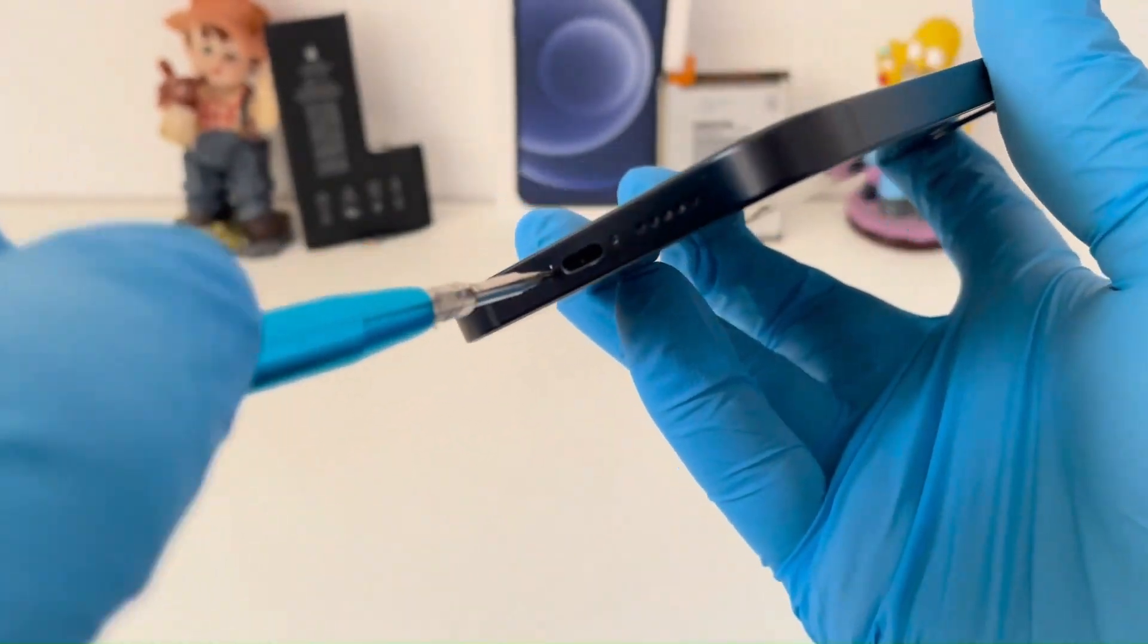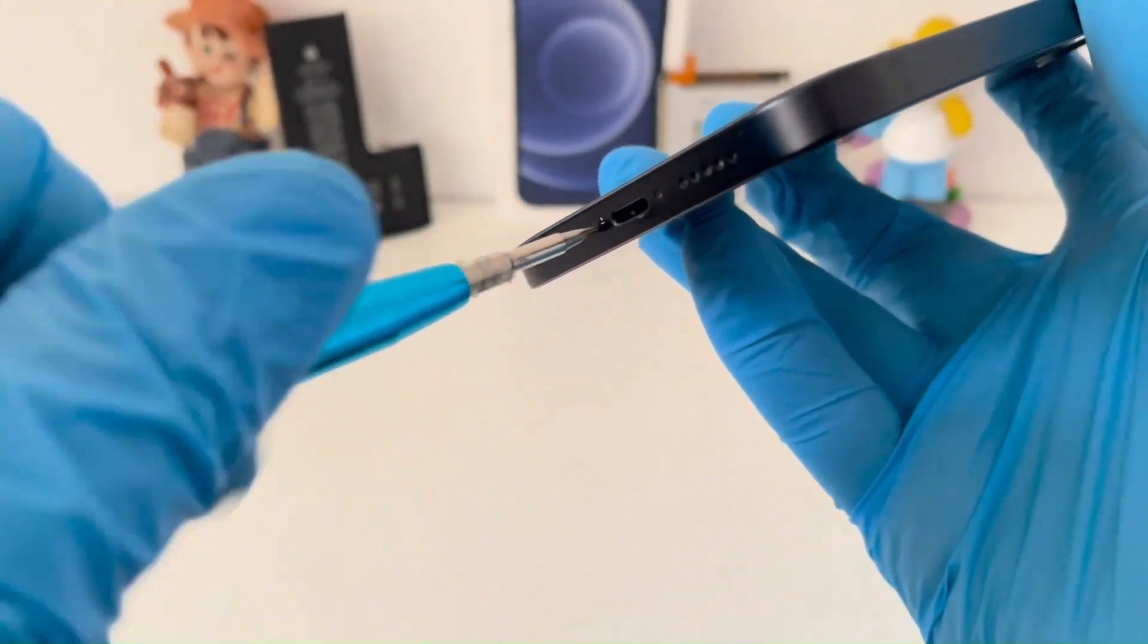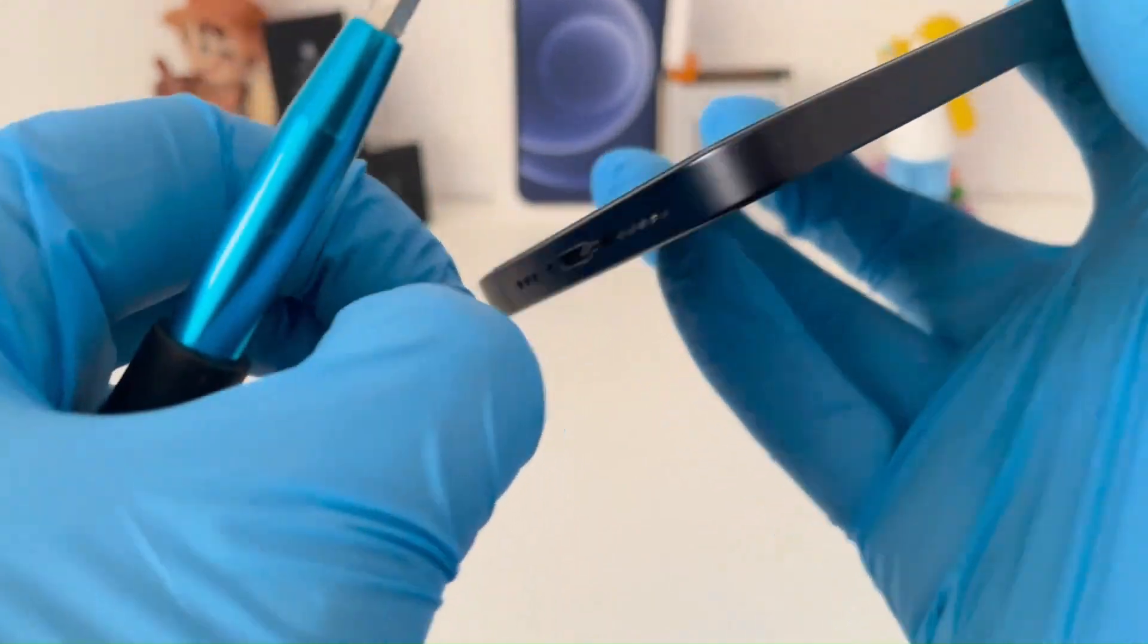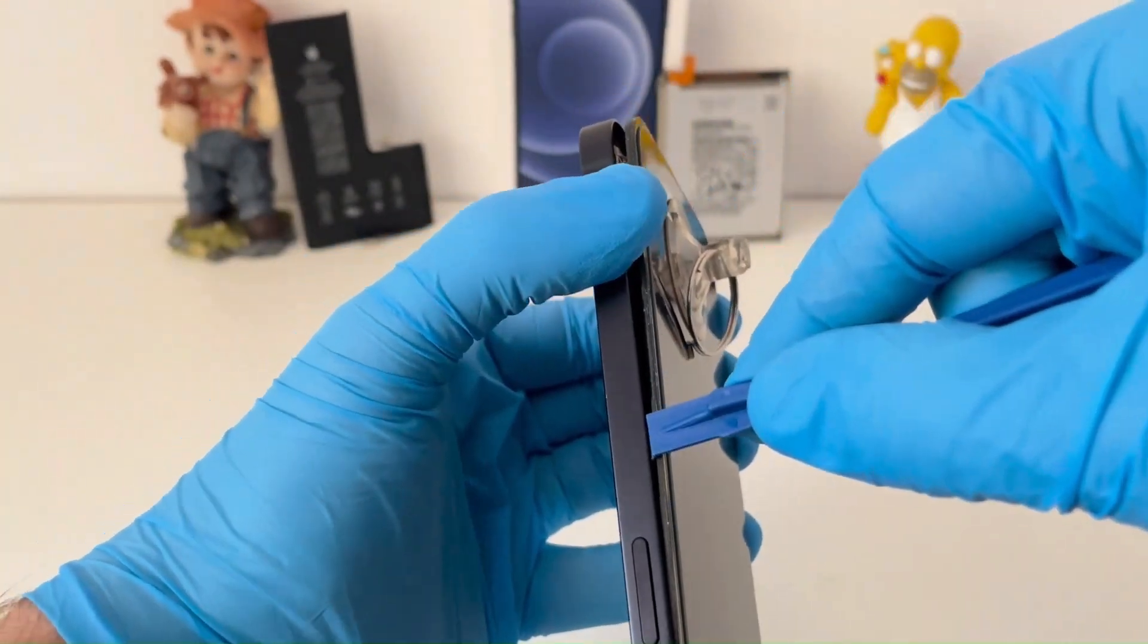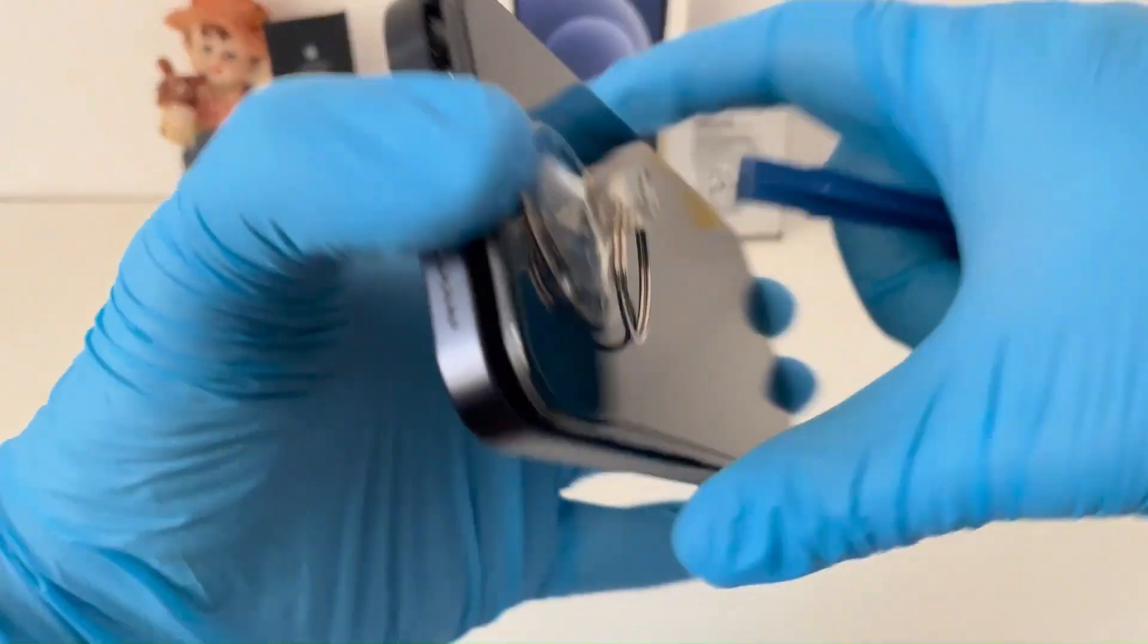The disassembly procedure is identical for all iPhones. It starts with unscrewing the bottom screws. In order to reach the battery, the screen must first be removed.